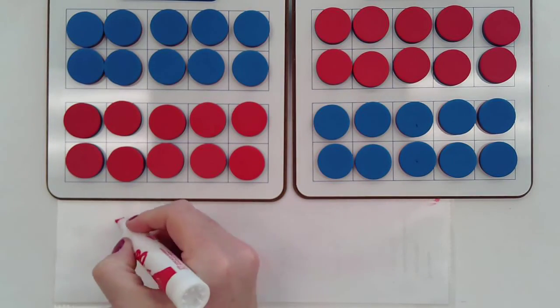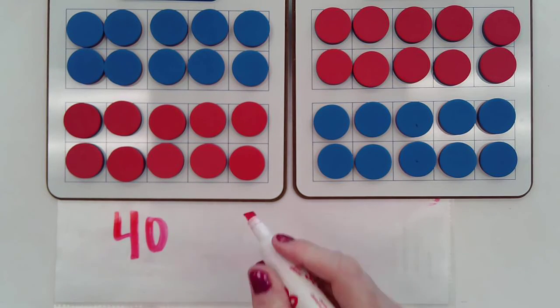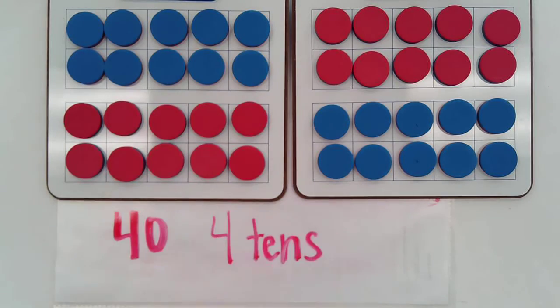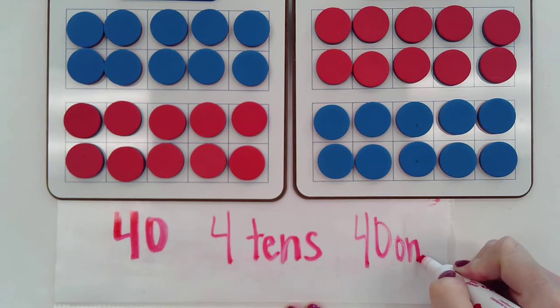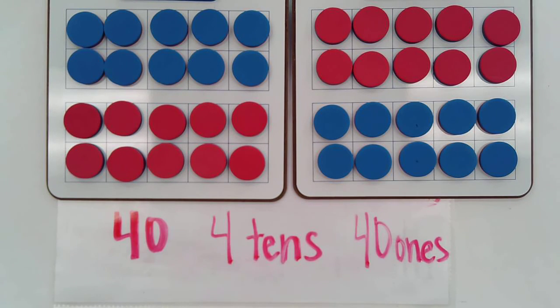So I know I have forty counters, or I have four tens because I have four ten frames filled up, or forty ones.